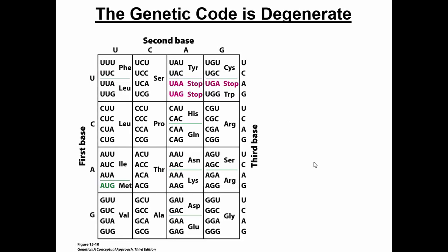Let's talk about some properties of the genetic code. The genetic code is called degenerate — another word for that is synonymous. What these two words mean is that there are multiple codons that can encode for the same amino acid. Another way to say it is there's redundancy in the genetic code. For example, leucine can be encoded by any of these four codons in this cell, as well as other codons throughout the genome. So that redundancy, or degenerate nature of the genetic code, means there's a little play in the genetic code — multiple codons can encode for the same amino acid.